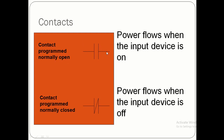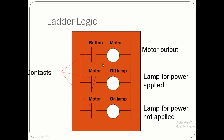When the input device is normally open, current can't flow through it. When it is normally closed, current can flow through it. The normally open position means current cannot flow; the normally closed position means current can easily flow through it.